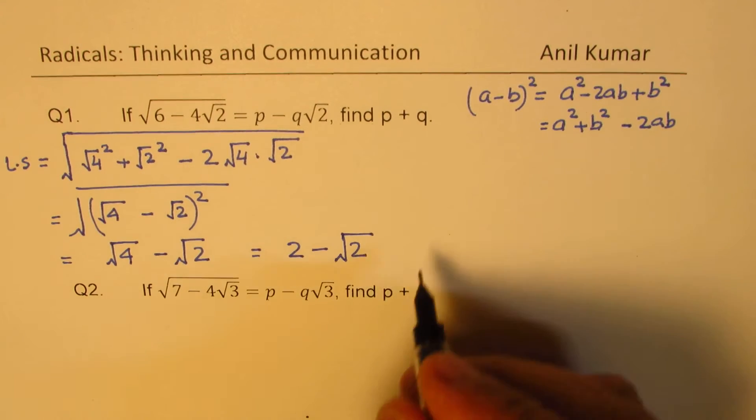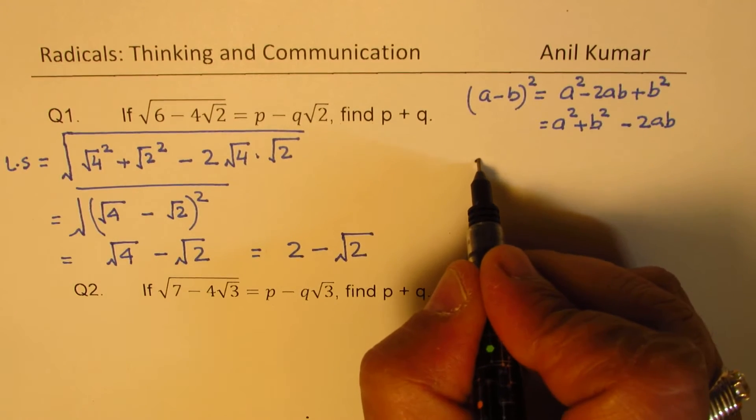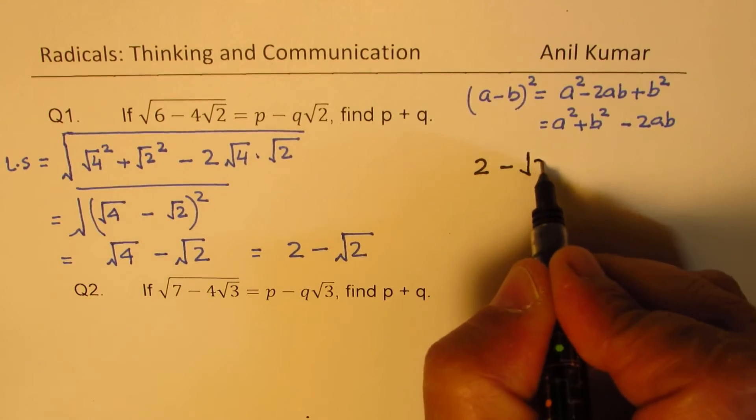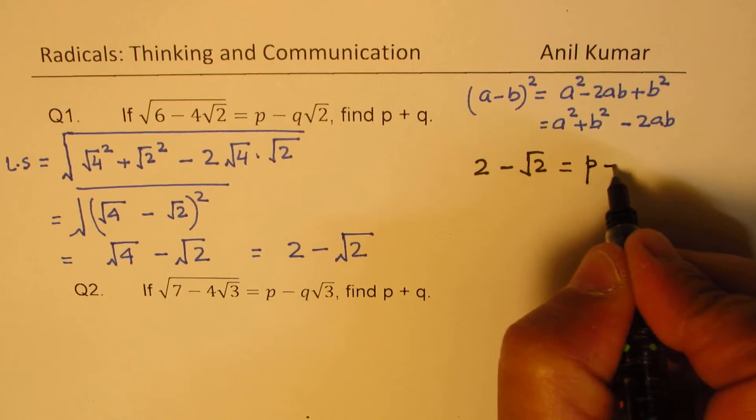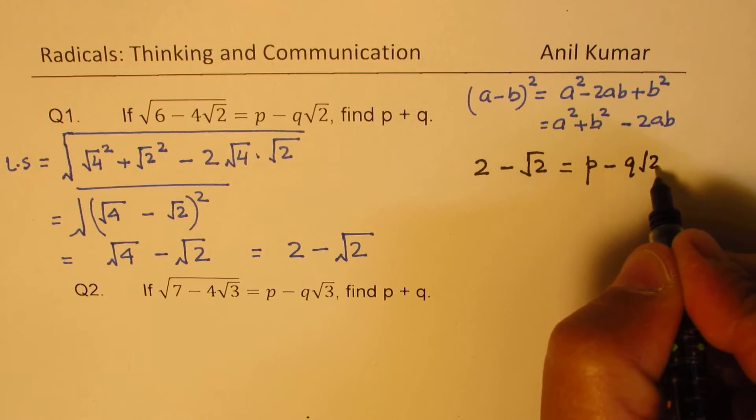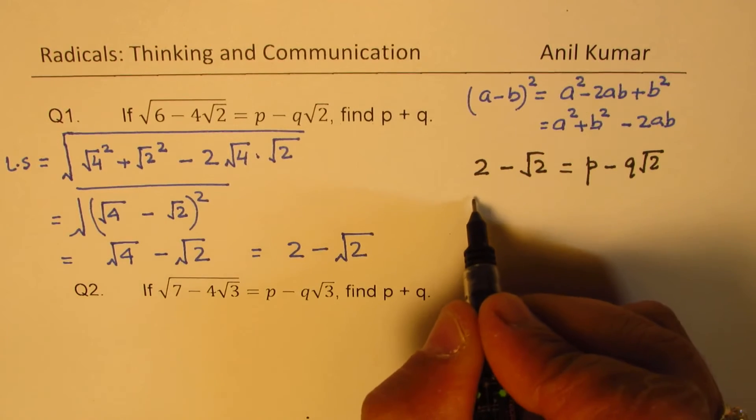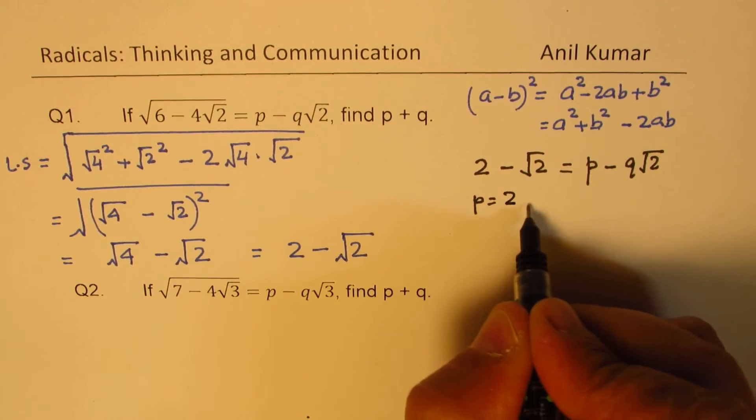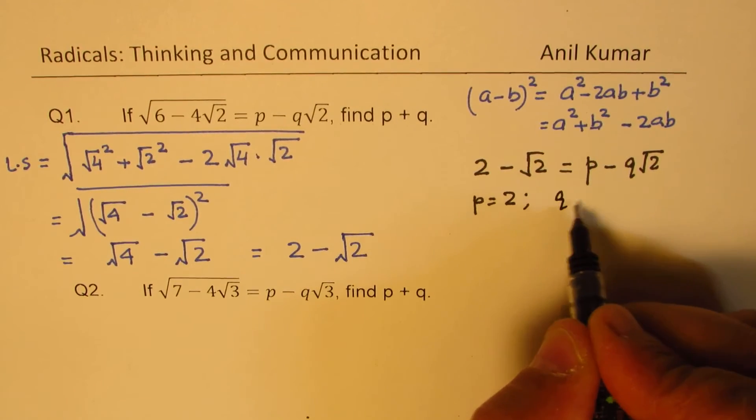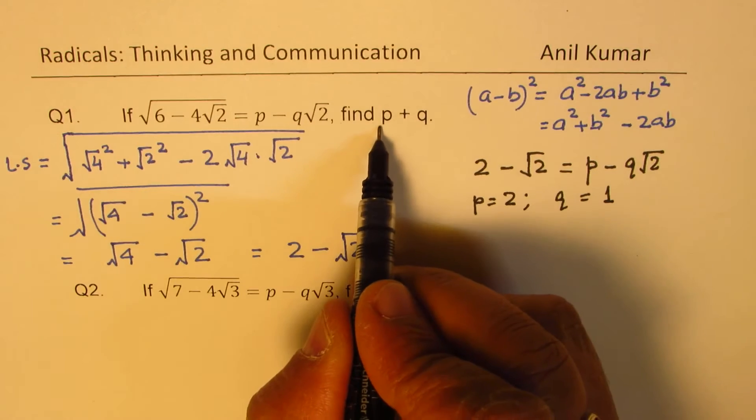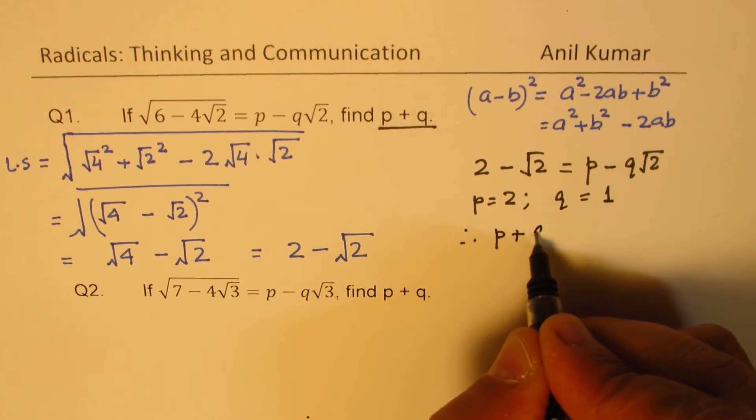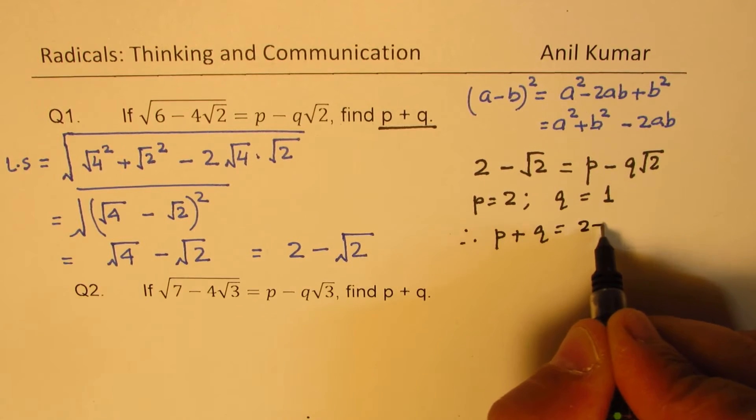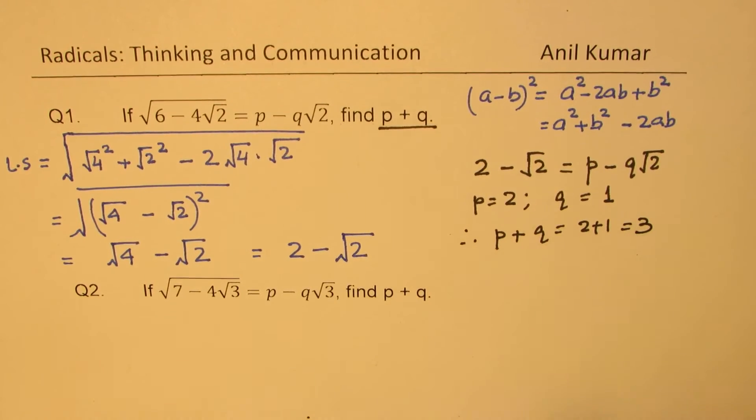Now, if you compare this, let me rewrite 2 minus square root 2. If you compare this with p minus q square root 2, then clearly, you get p as equals to 2 and q as equal to 1. You need to find the value of p plus q. And therefore, p plus q will be 2 plus 1, which is 3. So that is how you could solve such a question.